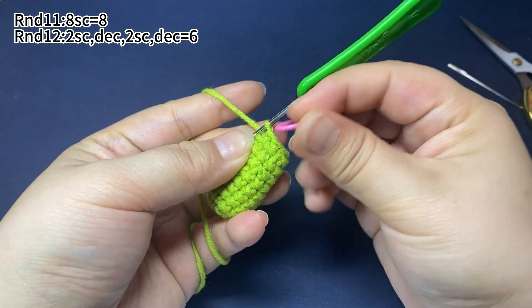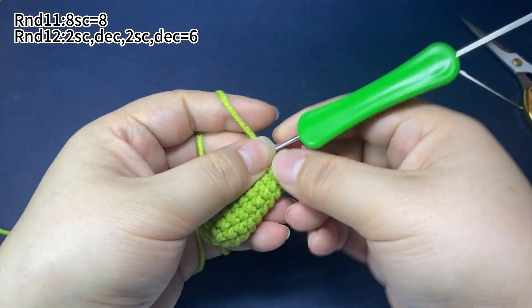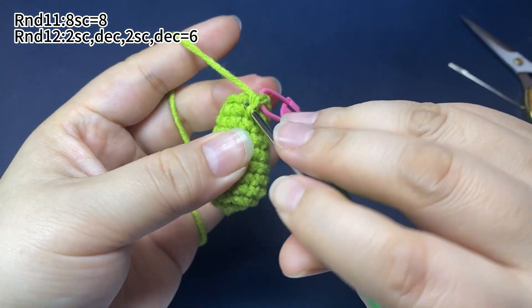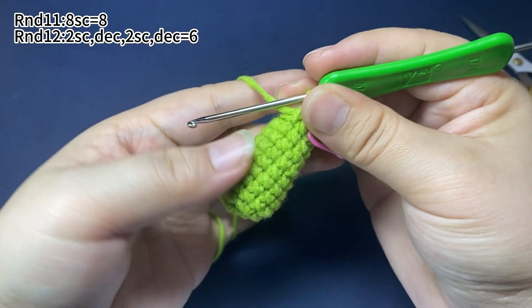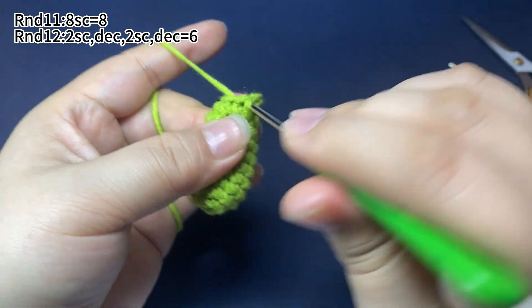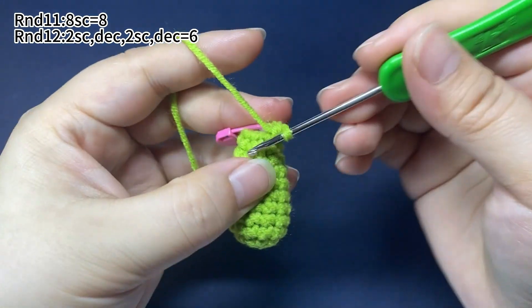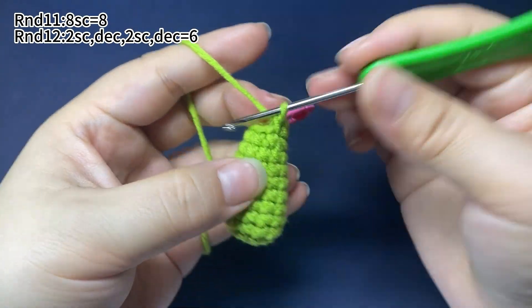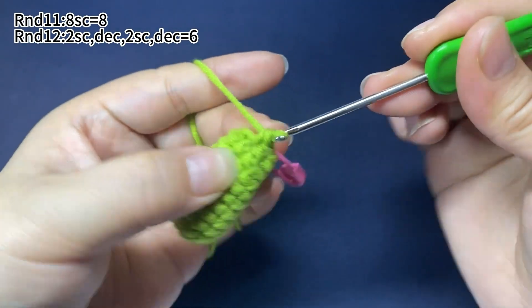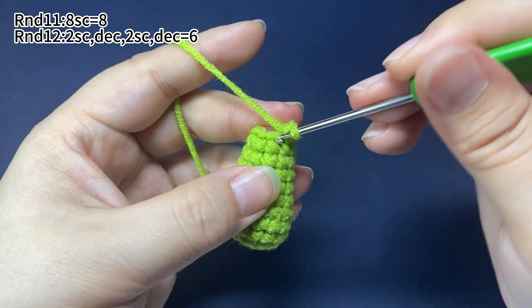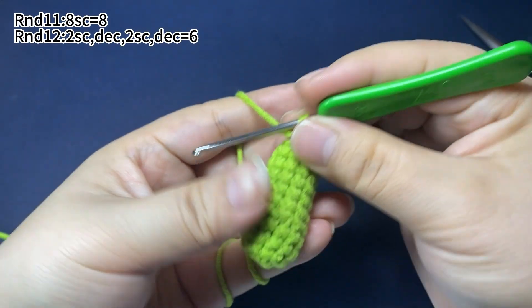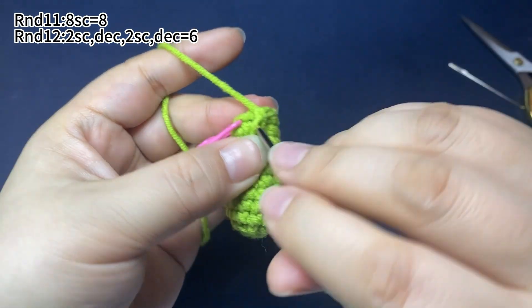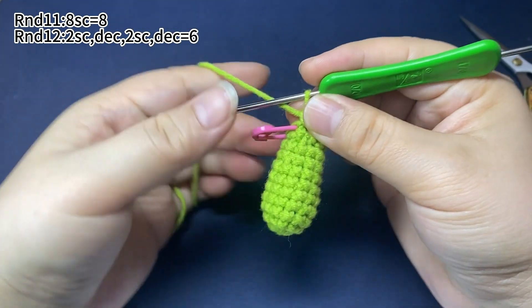Place a marker in the first stitch. Continue to work single crochets. Round 11 is finished.